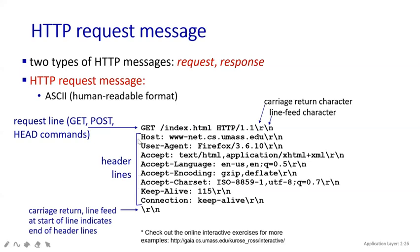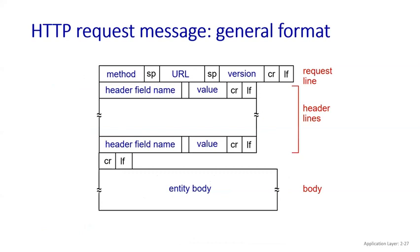This is all about how to write the request message format. Now moving to the general format of the HTTP request message. Here you have: method, SP (space), URL, version, CR LF — that is your request line. The next lines are your header lines where you write: header field name, value, CR LF. The last part is your entity body where you write the message. This is the HTTP request message format.